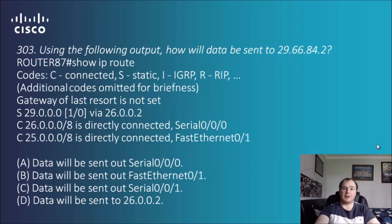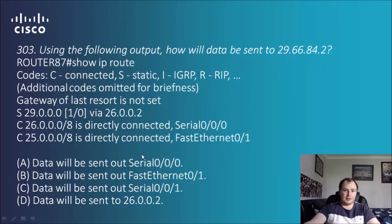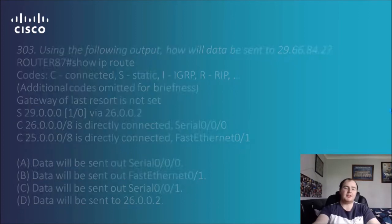Question 303: we've got another output — how will data be sent to 29.66.84.2? We've got networks connected here, and static routes for 29, 26, and 25 networks. Similar to before, we need to identify the 29 network and read the output. 29 via 26.0.0.2, so the answer is D.